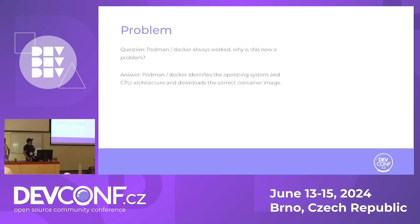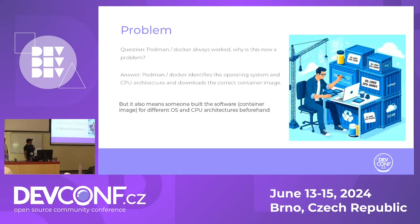The answer is: Podman and Docker identify the operating system and CPU architecture that the command is running and download the container image for that specific computer. But it also means that someone previously built the container image for the different OS and CPU architectures. As you can see in this picture, there are a lot of containers — one for each architecture and OS.